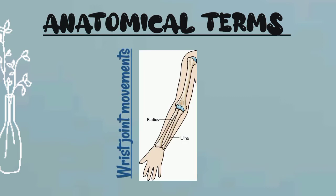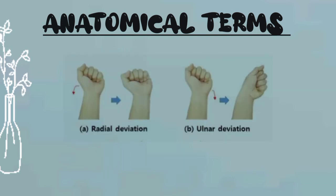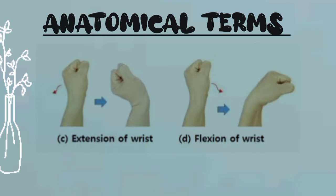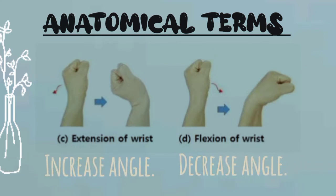Now let's talk about movements at the wrist joint. In the forearm there are two bones: the radius and the ulna. The radius is toward the side of the thumb and the ulna is toward the side of the little finger. The terms radial deviation and ulnar deviation are used respectively. If you bend your wrist toward the side of your thumb, it is called radial deviation.